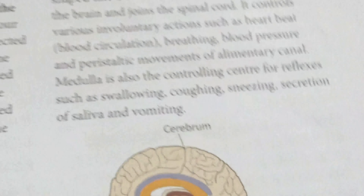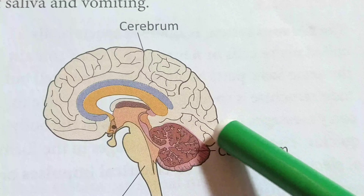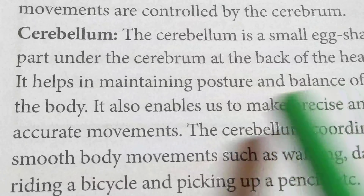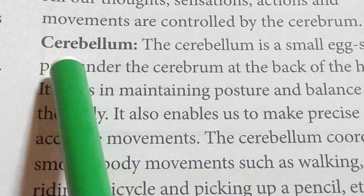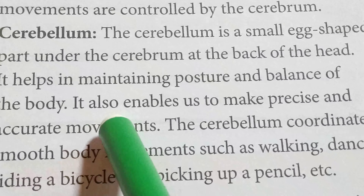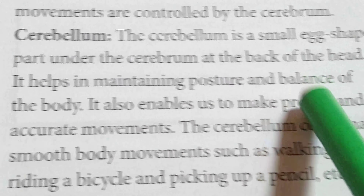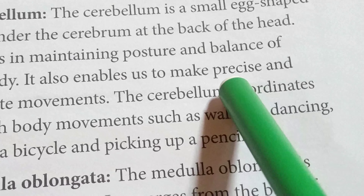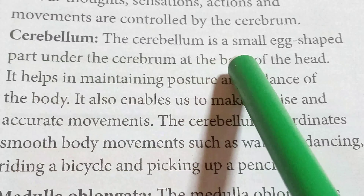The cerebellum is a small egg-shaped part located under the cerebrum at the back of the head. It helps in maintaining posture and balance of the body. It also enables us to make precise and accurate movements, coordinating smooth body movements such as walking, dancing, riding a bicycle, and picking up a pencil.